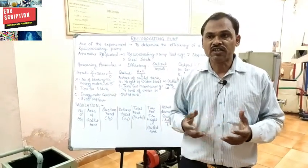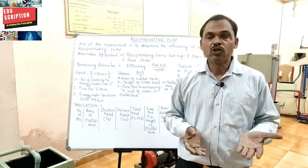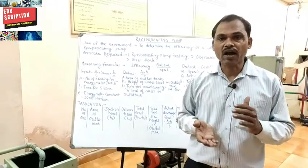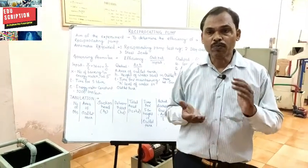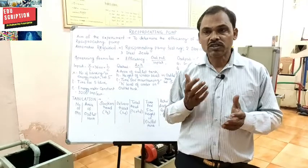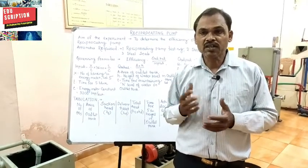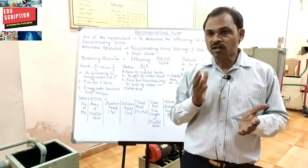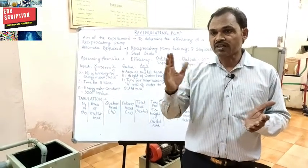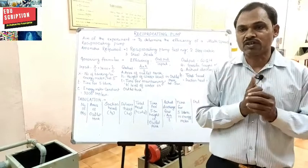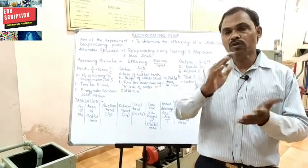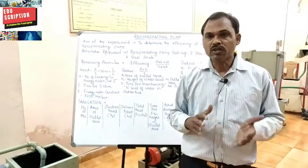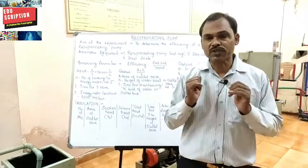This results in lifting the liquid to the required height. A reciprocating pump can be classified according to the movement of the piston — that is, single acting and double acting. In a single acting pump, liquid is in contact with one side of the piston, whereas in a double acting pump, liquid is in contact with both sides of the piston.